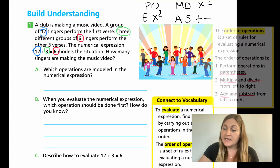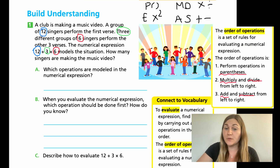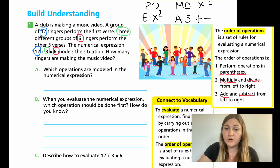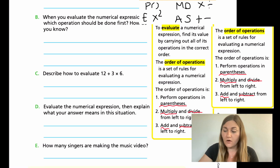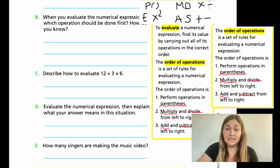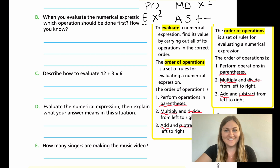Here are the five questions. Part a asks: which operations are modeled in the numerical expression? Part b: when you evaluate the expression, which operation should be done first and how do you know? Part c: describe how to evaluate 12 plus 3 times 6. Part d: evaluate the expression and explain what your answer means in the situation. Part e: how many singers are making the music video? Go ahead and try this page independently, then we'll go over it.